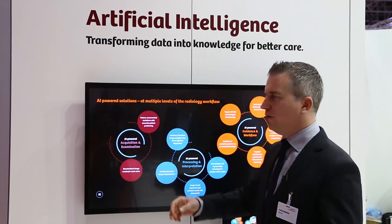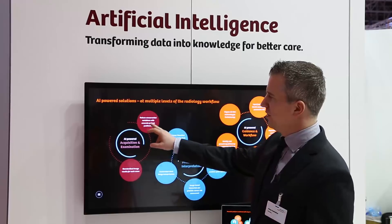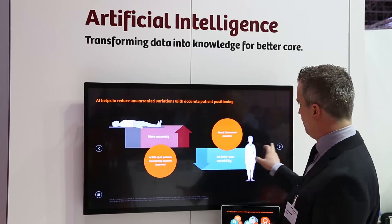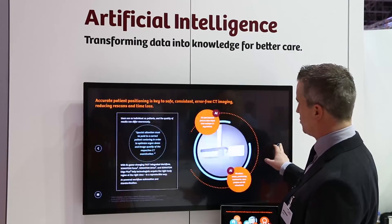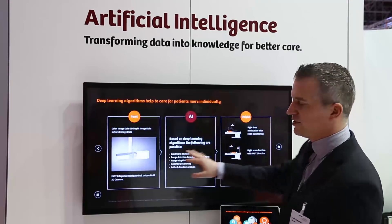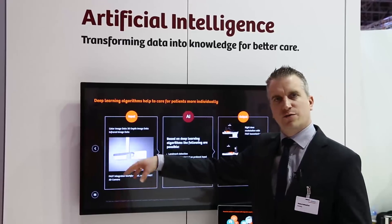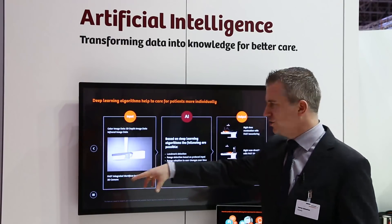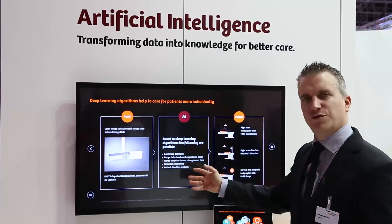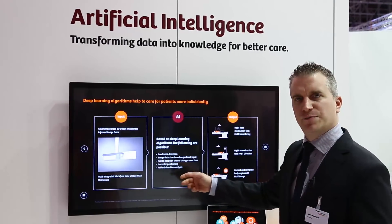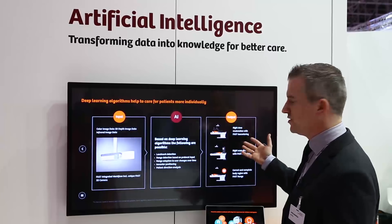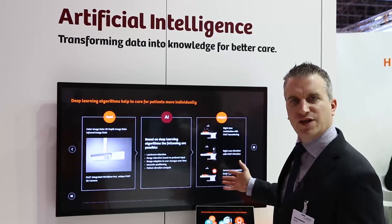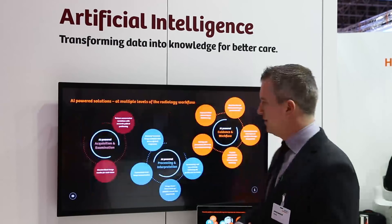An example of AI-powered examination acquisition is the infrared camera placed on top of CT scanners. It acquires an infrared image of the patient, runs it through a deep learning algorithm, and adjusts the ISO centering, direction, and scan range.